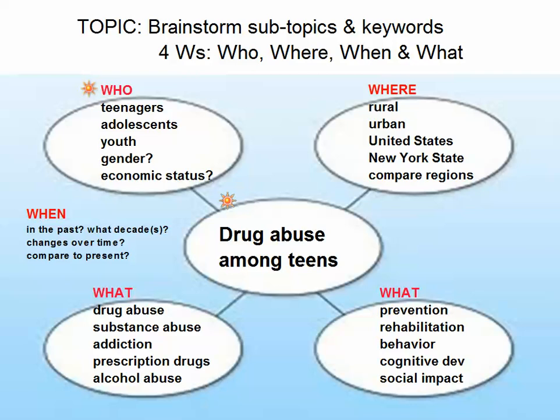There are two ways to think about this brainstorming process. First, we want to come up with related words and phrases, because the English language is slippery — there are often multiple words or phrases that describe the same concept. For 'teenager,' you might also use adolescent, youth, or a specific age range. Second, think about subtopics: might a researcher slice the demographic of a teenager into smaller segments like gender, economic status, or ethnicity? Those aspects of a teen's environment could affect when and how they abuse drugs.